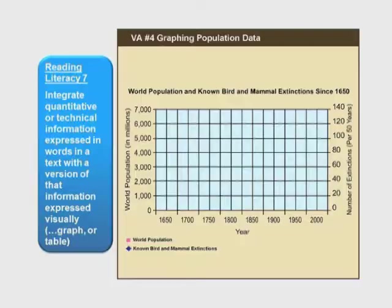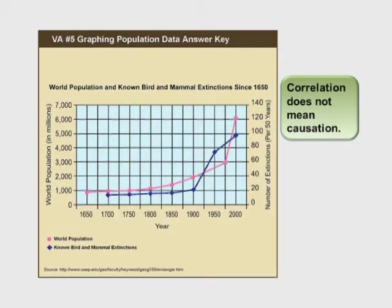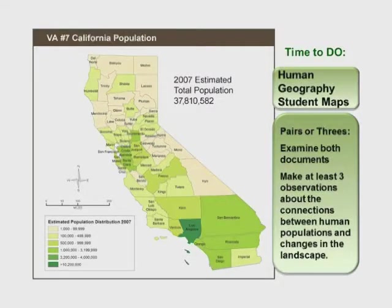It's already set up to work in small groups and larger groups. There's a standard about integrating quantitative or technical information — we have all sorts of graphs throughout the different units. Here's one where they talk about correlation does not mean causation. Wouldn't that be good for our students to know? They also examine things like maps, look at statistical documents, and make observations on patterns. And that all goes with the analysis.